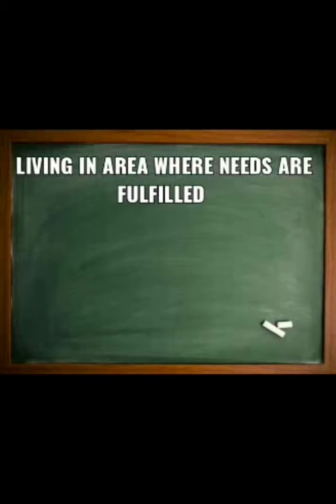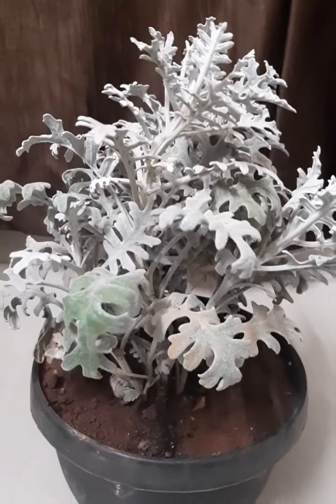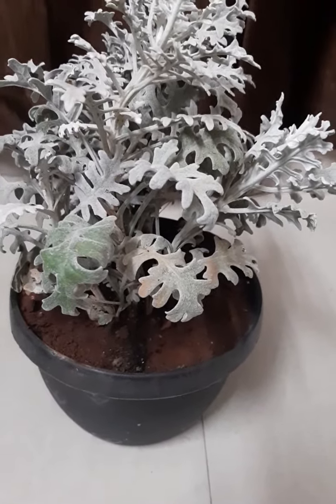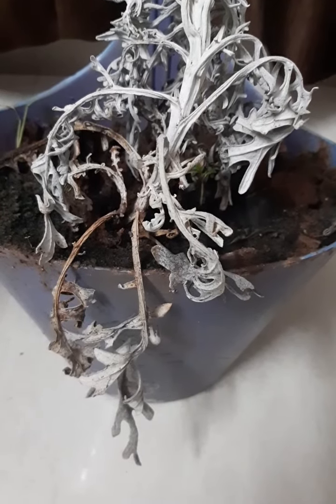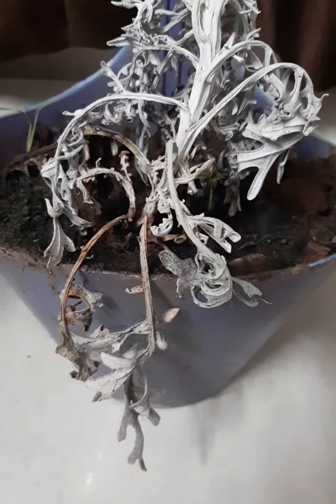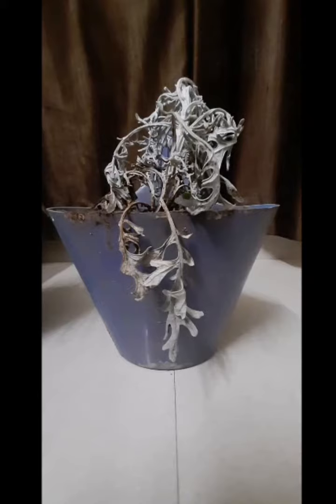Let us learn about living in an area where needs are fulfilled. Look at this beautiful plant — the name of this plant is silver dust plant. It is a winter plant and it requires less water. Now look at this pot — this is the same silver dust plant. What must have happened to it? Plants that are not aquatic cannot grow in marshy areas. If they get more water than they need, they rot. You can try the activity given on page number 8.